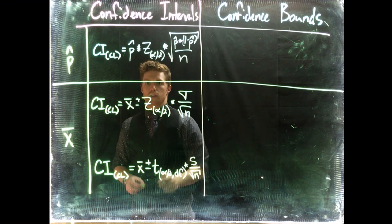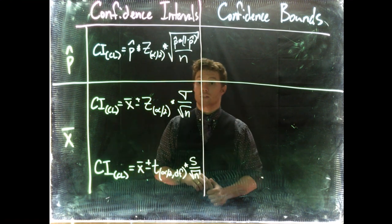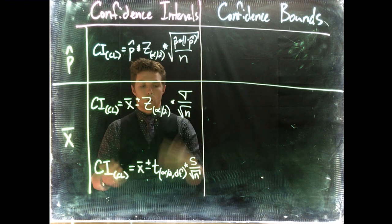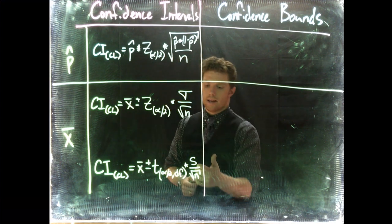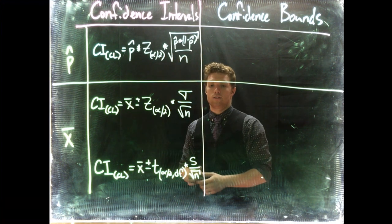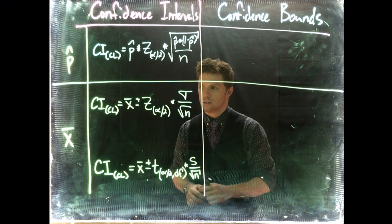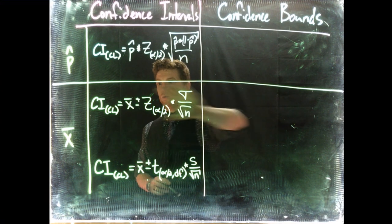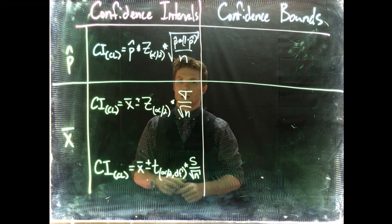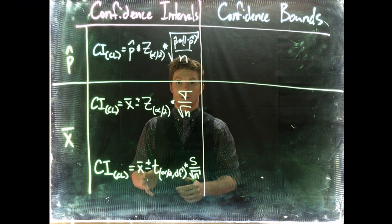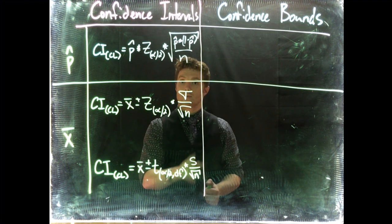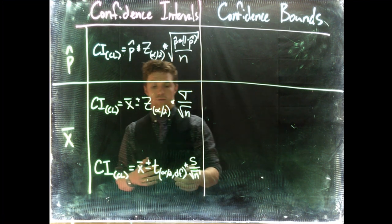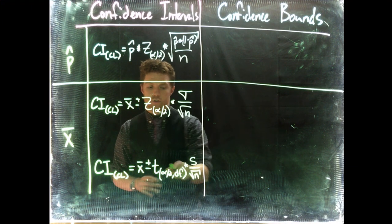The difference here comes from our problem. Do we know the population standard deviation at the beginning of our test? Or, when we gather our data, do we calculate out the sample standard deviation? If we know the population standard deviation, we want to use it and we'll use the z equation. If we don't know the population standard deviation and have to calculate it from the sample, then we want to use the t distribution.